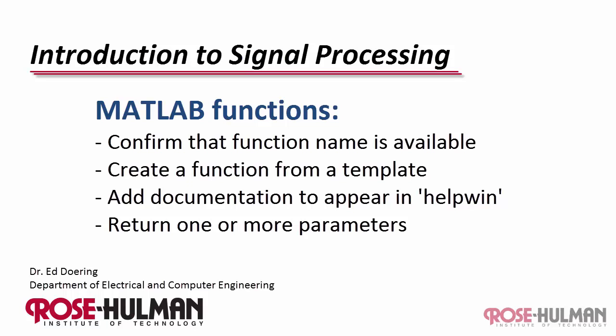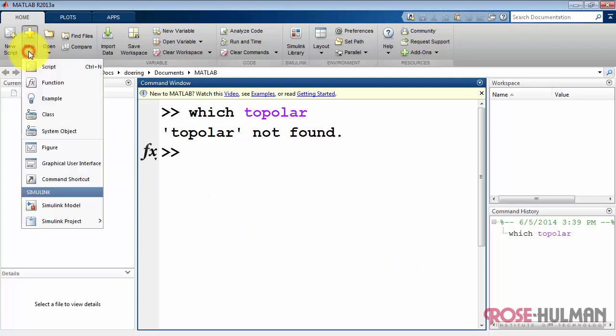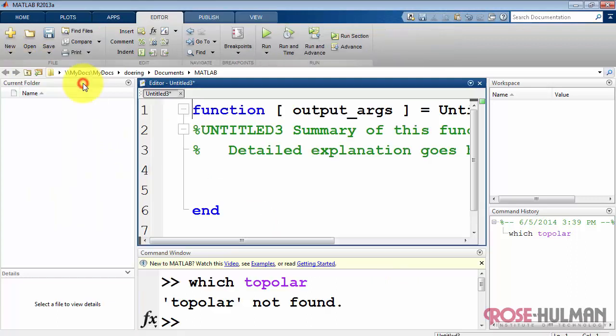Now I'd like to show you how you can write your own function in MATLAB. To begin with, you want to make sure that the function name that you pick is not already known to MATLAB. I'll use which to that end. Evidently, this function that I want to create called toPolar is not already defined.